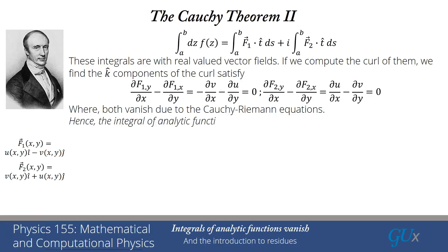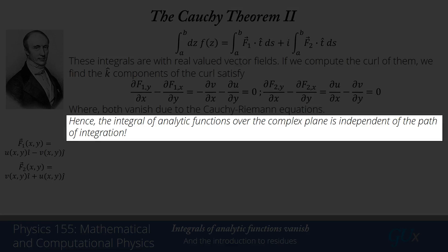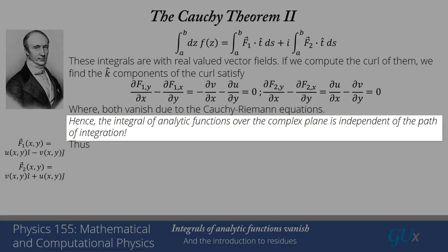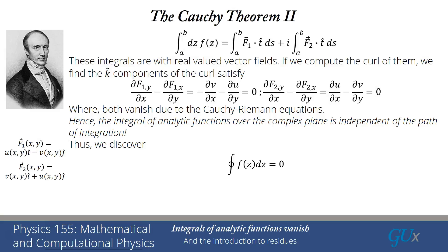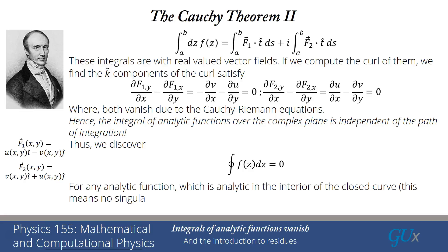Both of those curl components are equal to zero because f is an analytic function, so u and v must satisfy the Cauchy-Riemann equations. From Stokes' theorem, when the curl is zero the integral is path independent. Putting this together for both real and imaginary parts: the integral of analytic functions over the complex plane is independent of the path of integration. In particular, for a closed path where the initial and final points are the same, the integral must be zero—as long as the function is analytic in the interior of the closed curve with no singularities, discontinuities, or branch cuts. That is Cauchy's theorem in its first form.